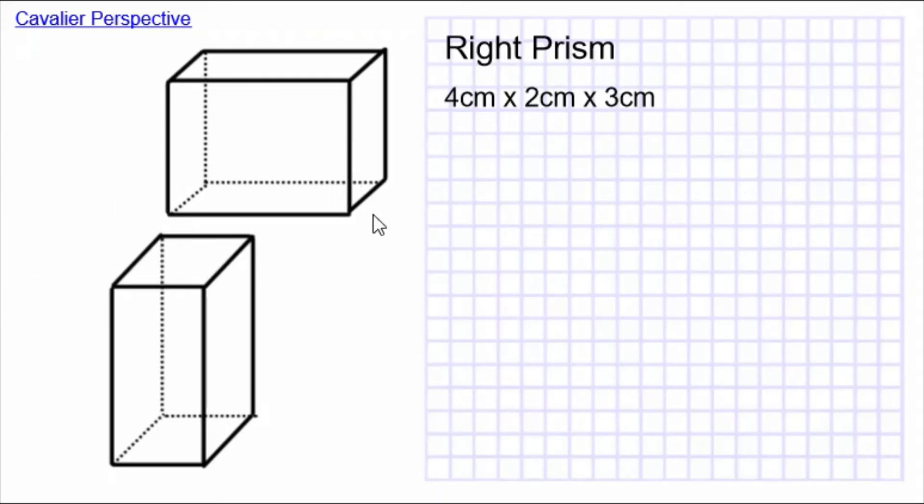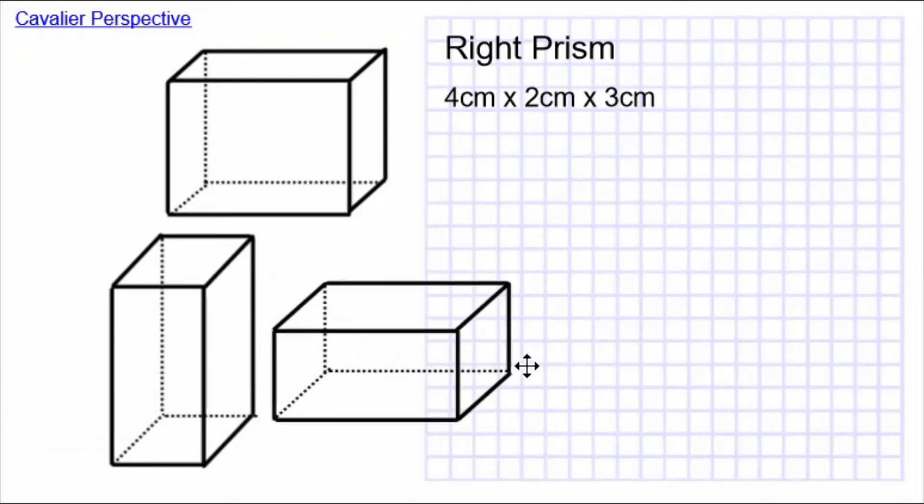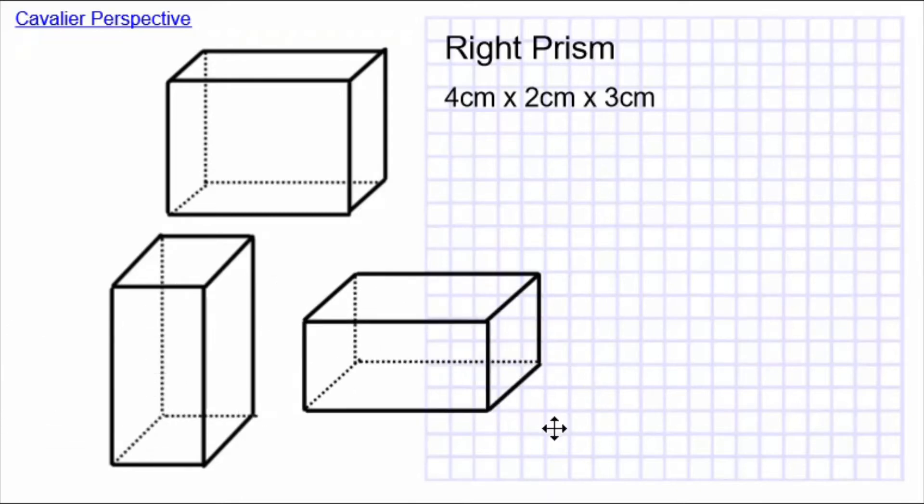Here's a second version of the same right prism. In the first picture, the side on the bottom is 2 cm by 3 cm. But in this second one, the side on the bottom is 4 by 2. And in this third one, the side on the bottom is 4 by 3.